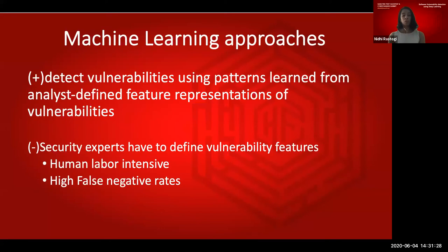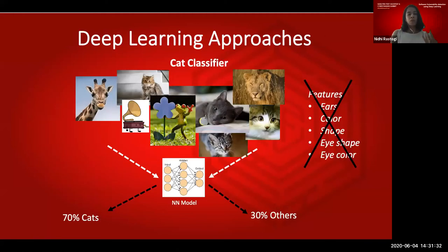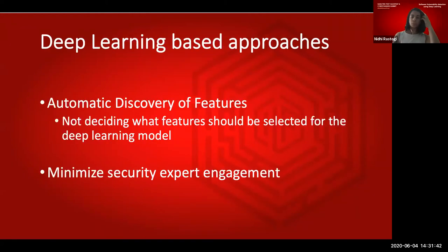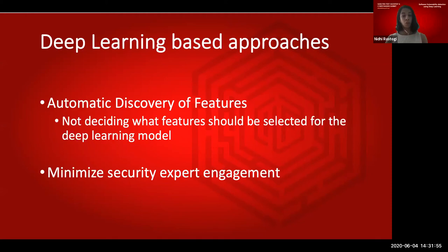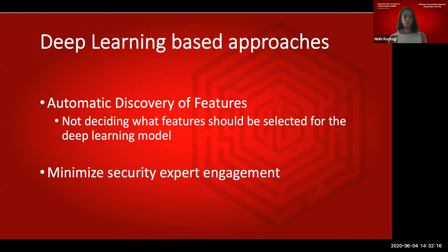We need to find ways to get over those limitations. Not having to define features is one of the areas where deep learning approaches have an edge over machine learning. Using deep learning, features can be automatically discovered — that is the biggest advantage, because it acts like a black box. You just feed in data in a certain format so the model can understand it, and it spits out results without you having to worry about which features to use.